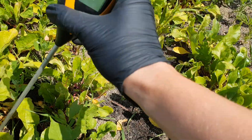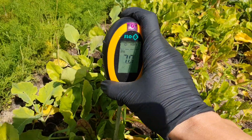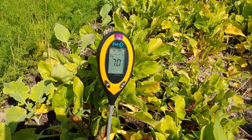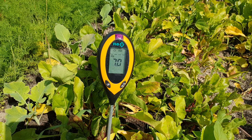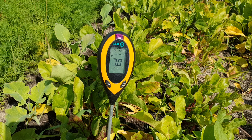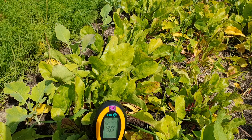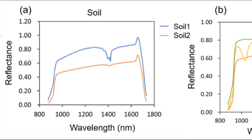The first step to reducing nitrogen losses from the soil is to analyze the soil. This allows you to learn about the pH and content of macro and micro elements. Too low a pH, as well as deficiencies or excesses of some elements, may hinder or prevent nitrogen binding, which will lead to its rapid escape from the soil.